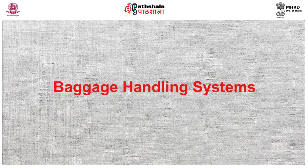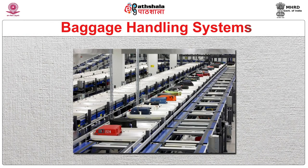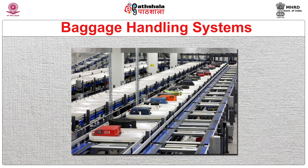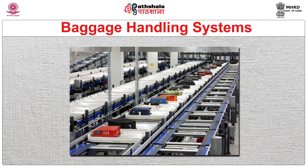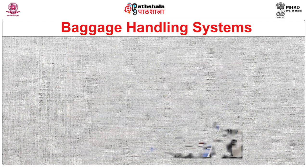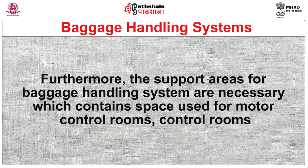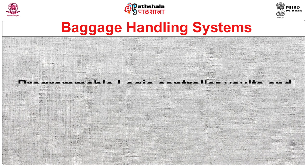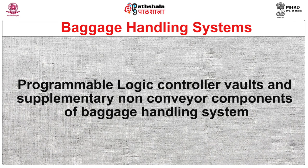A baggage handling system primarily consists of various areas that aid various roles comprising inputs of baggage, screening area, makeup area, and claim area. Furthermore, the support areas for baggage handling system are necessary, which contain space used for motor control rooms, control rooms, programmable logic controller vaults, and supplementary non-conveyor components of the BHS. The support areas may vary greatly depending on the air terminal cost, design, and functions.